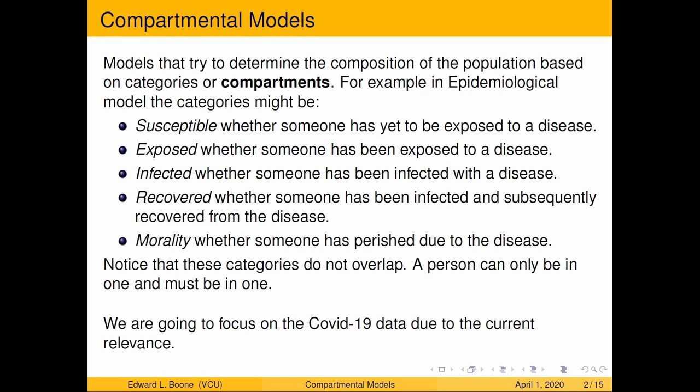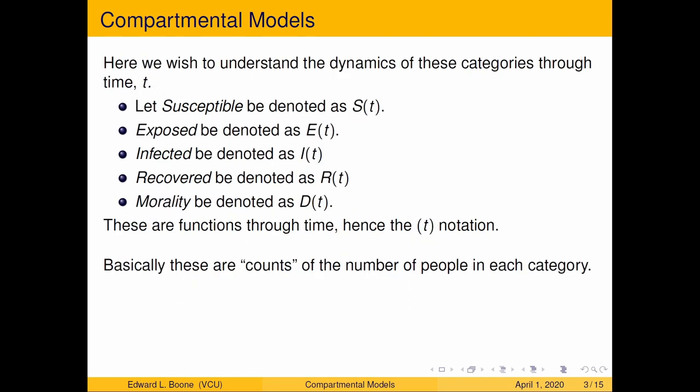We're focusing on the COVID-19 data because of its current relevance. Suppose we want to understand the dynamics of these categories through time. We'll let susceptible be S(t), exposed be E(t), I(t) is infected, R(t) is recovered, and mortality will be noted as D(t). These are functions of time, basically counts of the number of people in each category.